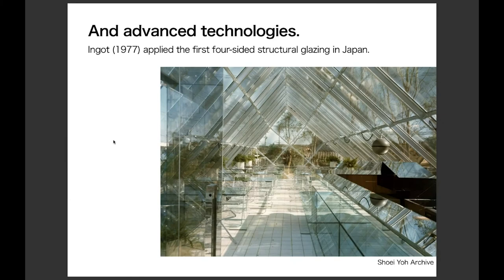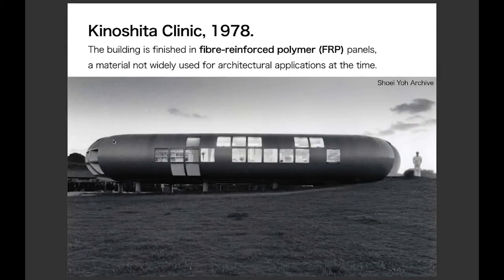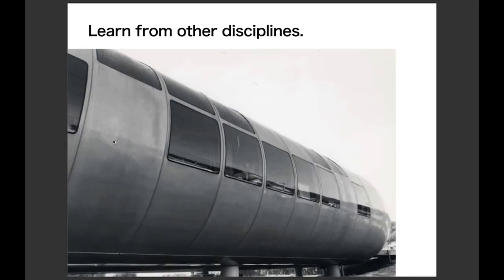His pursuit of non-gravity and transparency led him to apply advanced technologies. Coffee Shop Ingot, built in Fukuoka in 1977, is one example — in this project Yo applied the first four-sided structural glazing in Japan. Kinoshita Clinic also applied advanced technology to create a building that defies gravity; the building is finished in fiber-reinforced polymer panels, a material not widely used at that time. Yo also applied a silicone ceiling hinge used in the vehicle industry. Thanks to his background as an interior and product designer, he was never afraid of applying new technologies, which I think is also a reason why he applied computational design earlier than other Japanese architects.